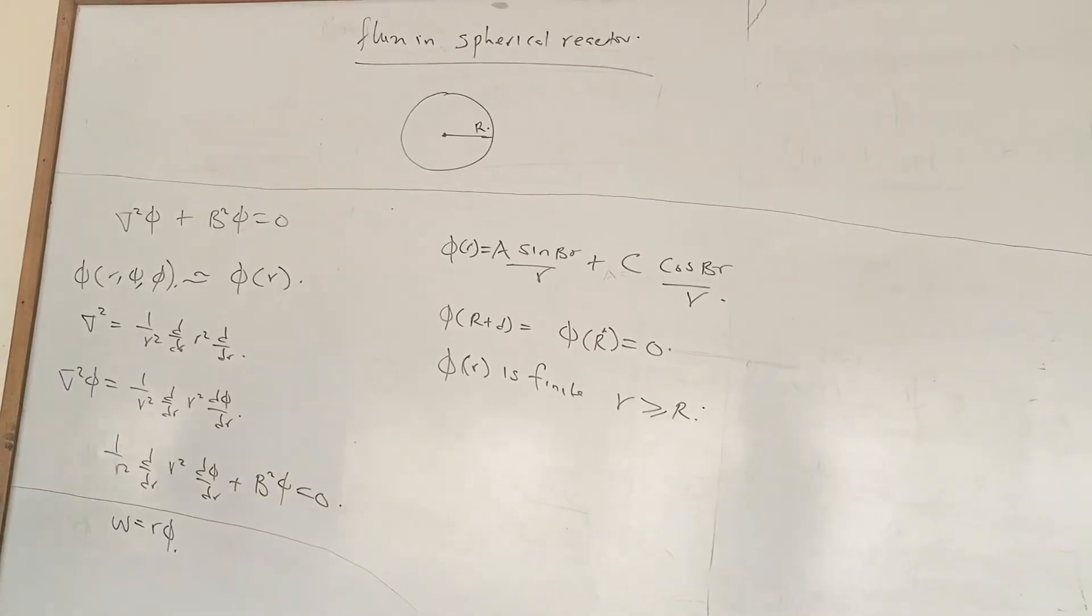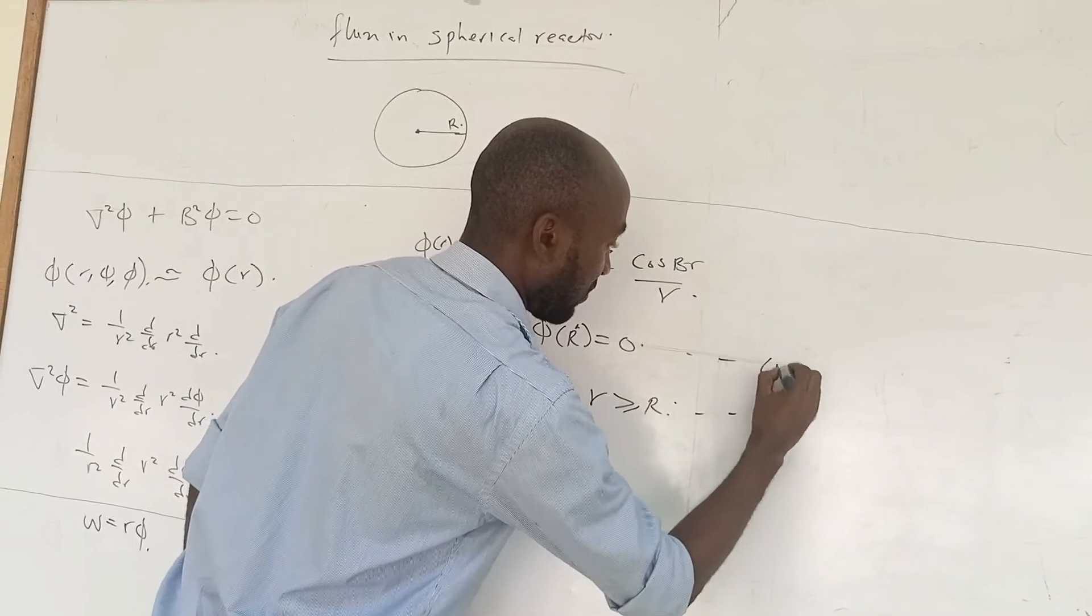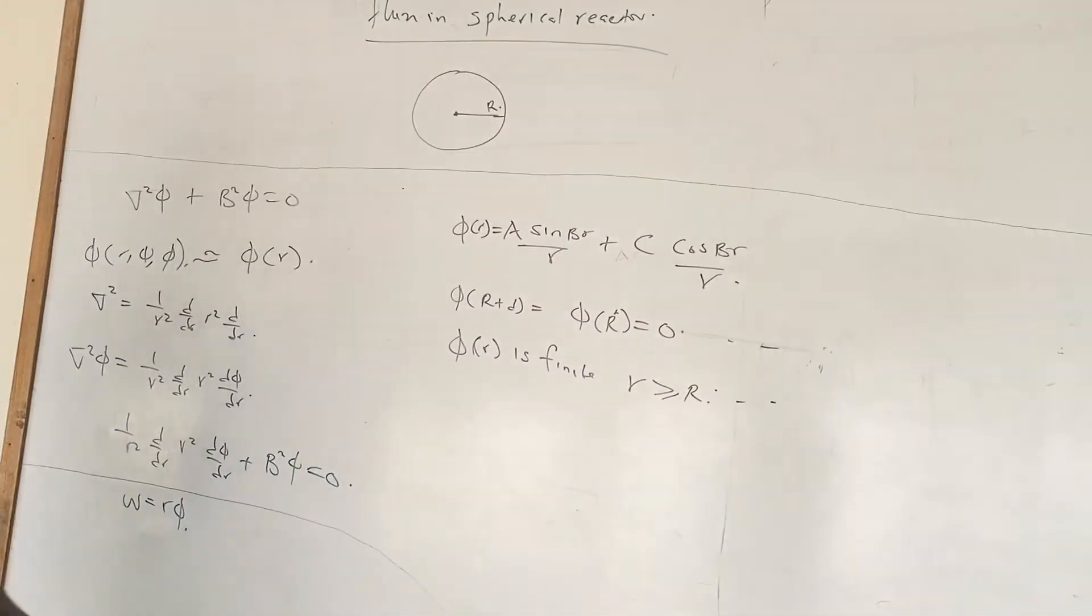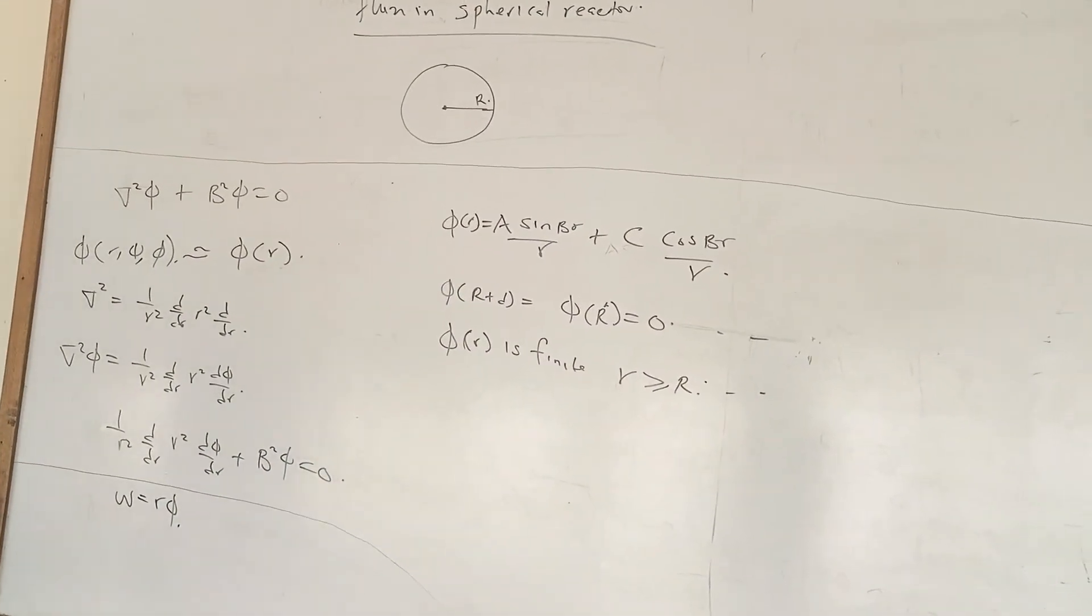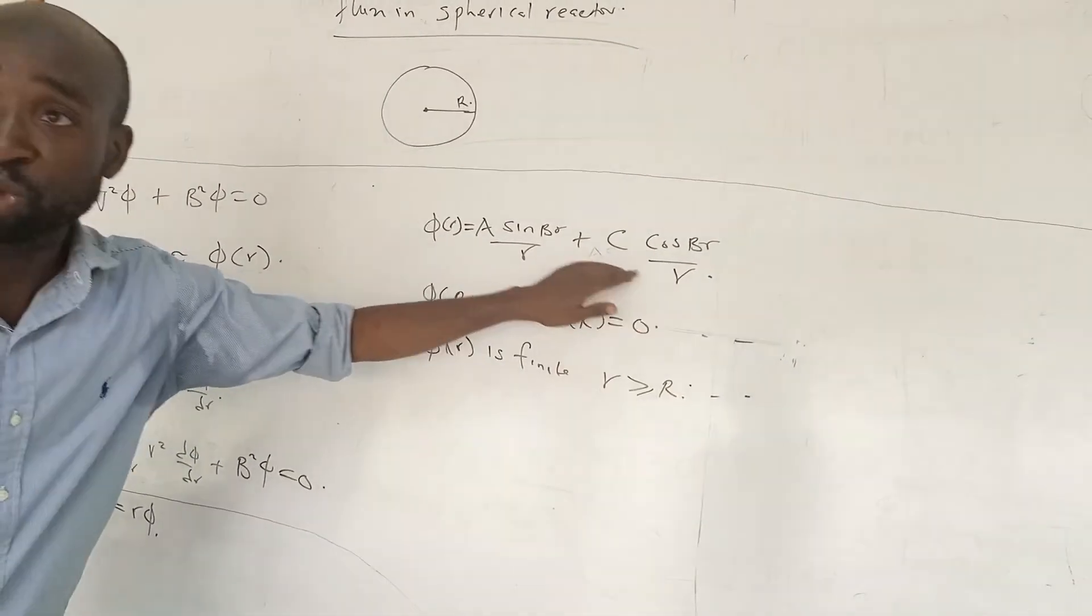That is within the sphere, the flux is a finite number. So these are the two things that we are going to use here, these are the two boundary conditions that we are considering. Let's look at the first one.